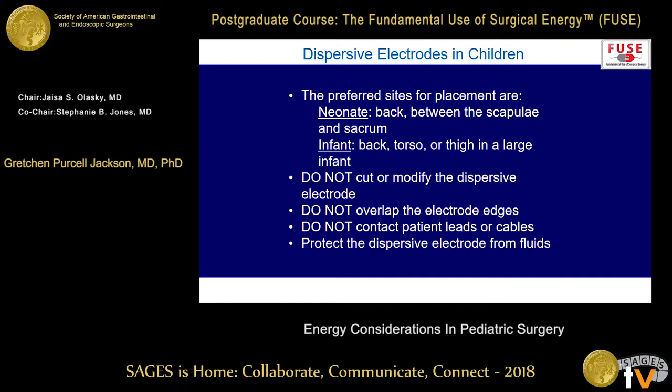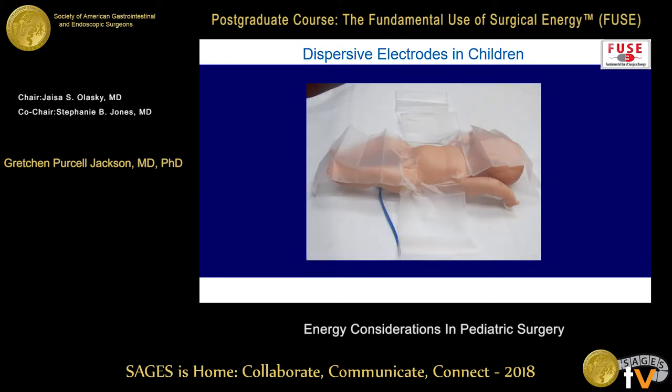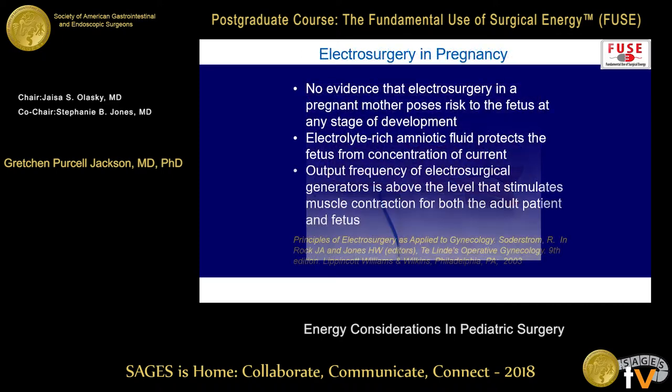In neonates, place the dispersive electrode on the back between the scapula and the sacrum. In older infants, the back, torso, or thigh can be used. Be careful with the adhesive on delicate skin — especially in newborns or premature infants where skin is thin and undeveloped — as removing the electrode can peel skin off. Fluids from the operative site or irrigation can compromise the electrode; I protect the dispersive electrode site with water-resistant drapes. If you cannot get a dispersive electrode to work, bipolar devices are always your alternative.